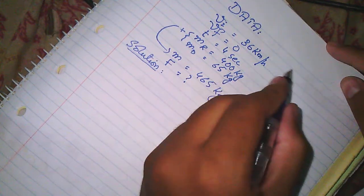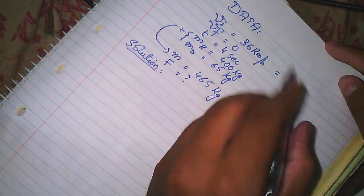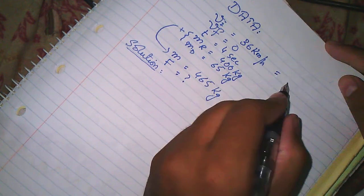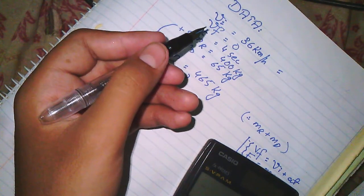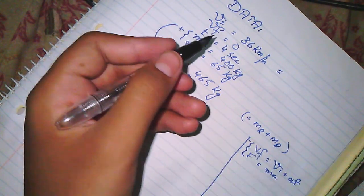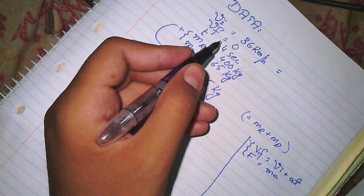We will convert initial velocity. 36 km per hour, which will convert by dividing by 3.6.